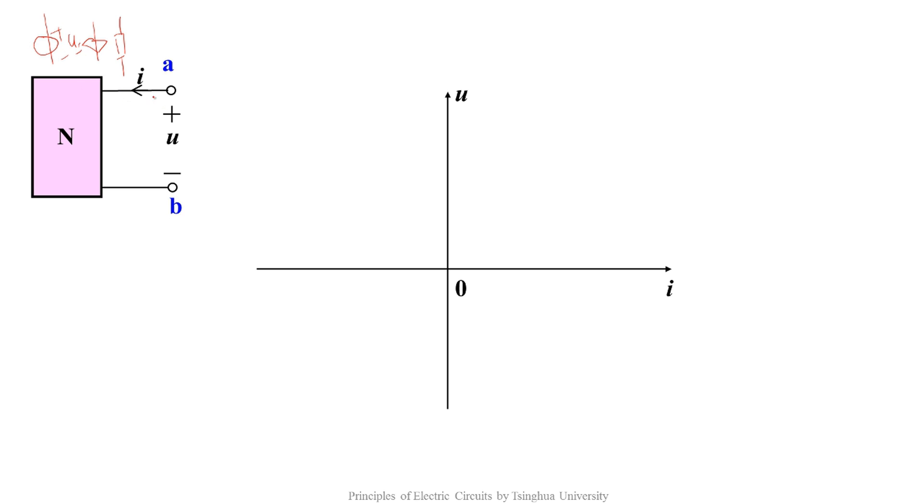Seeing from the port whose voltage and current have associated reference directions, what UI form can the network represent? Let's review some special conditions.